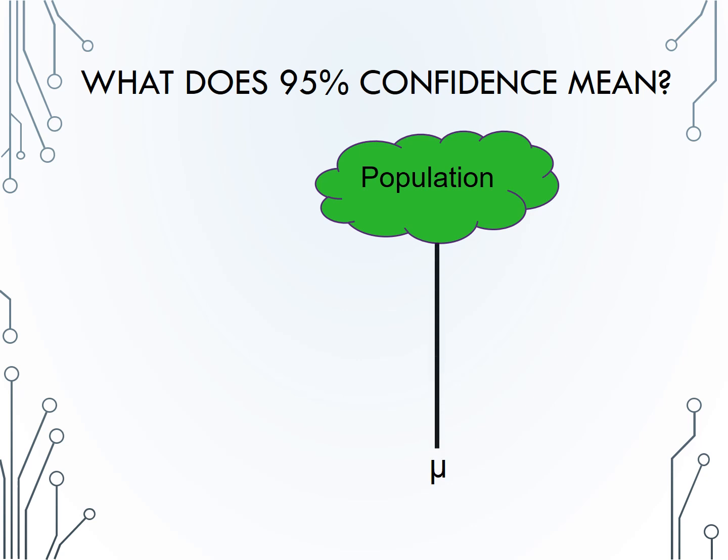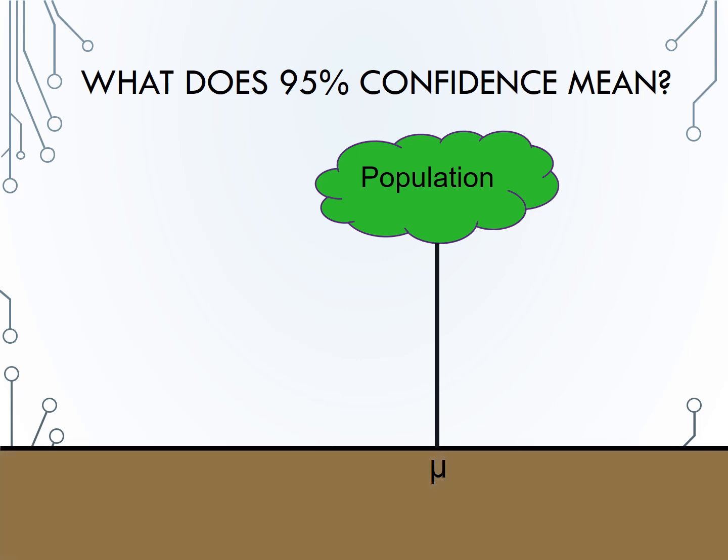You may recognize this visualization from the bootstrapping video. In real life, we don't know the value of mu or the population, but if we were able to repeatedly sample from the population, we would draw sample means, x-bars, from each different sample.